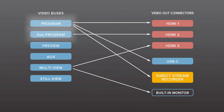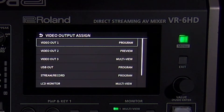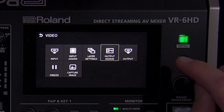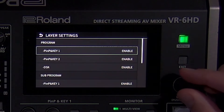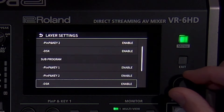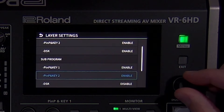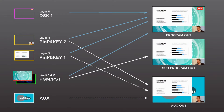Program and subprogram are what your audience sees — it is the selected input plus transitions and composition layers. The aux bus is independently switchable from program. This can be helpful if you want to send a PowerPoint to in-house displays, or set up a confidence monitor on stage for your presenter. You can customize which composition layers are visible on program, subprogram, and aux using the layer settings submenu. This is helpful if you want subprogram to be a clean version of program without any overlays, or if you have a hybrid event with different composition layer needs for the in-house and stream feeds.